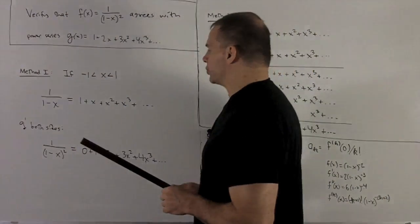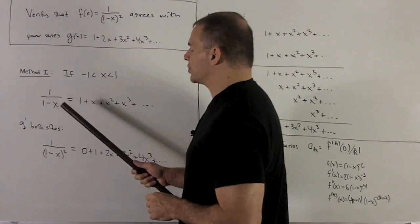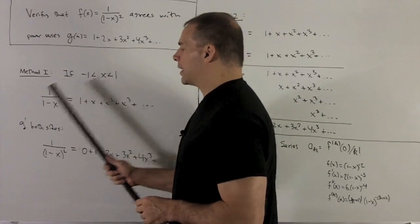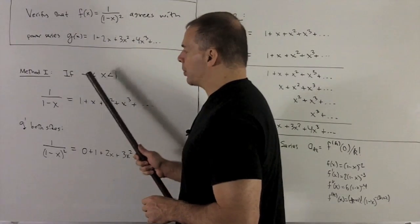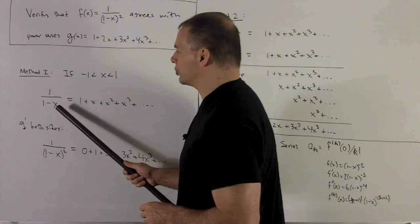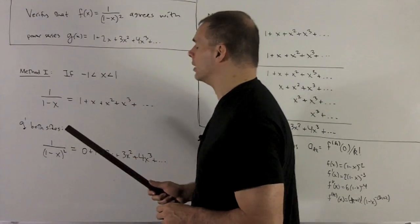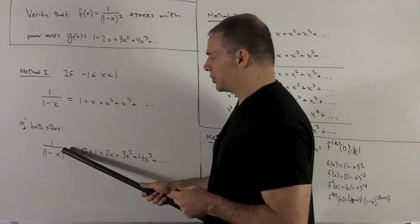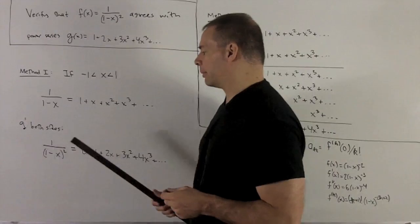I'm going to take the derivative of both sides. The derivative of this is 1-x to the -1 power, so the -1 comes down, the exponent becomes -2, and then chain rule says multiply by derivative of the inside, which is -1. The minus signs cancel, I have a -2 in the exponent, so we're going to have a square in the bottom.